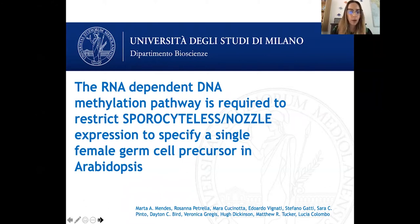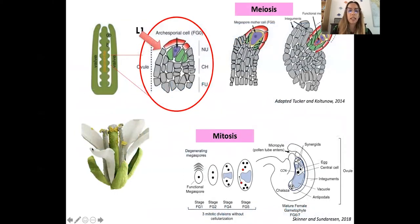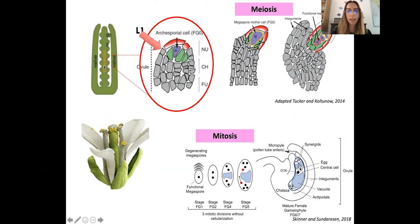I wanted to start by explaining female germline differentiation in angiosperms. In our model plant, Arabidopsis thaliana, female germline differentiation occurs within the pistil. From the placenta we have the protrusion of the ovules as finger-like projections, and at the ovule primordia stage we can already identify three different zones: the nucellus, the chalaza, and the funiculus.